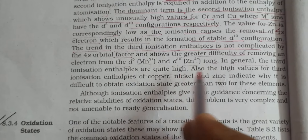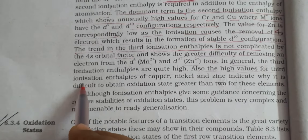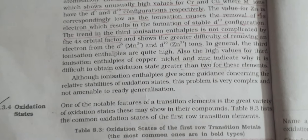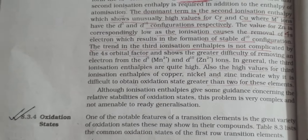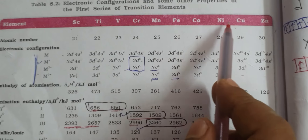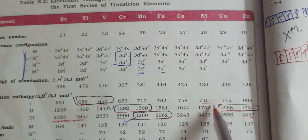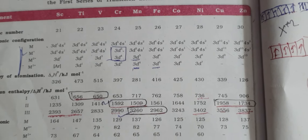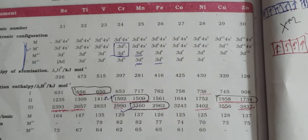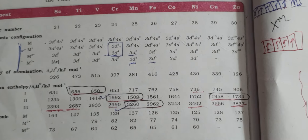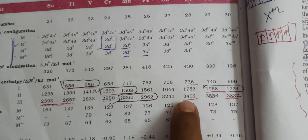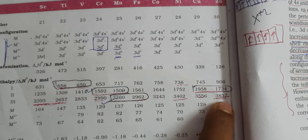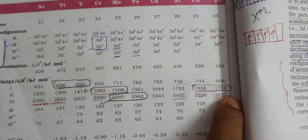In general, the third ionization enthalpies are quite high. The high values for third ionization enthalpies of copper, nickel, and zinc indicate why it is difficult to obtain an oxidation state greater than +2 for these elements. To form the +3 state, an electron must be removed from d¹⁰, which is difficult — first because d¹⁰ is stable, and second because nuclear charge is increasing.